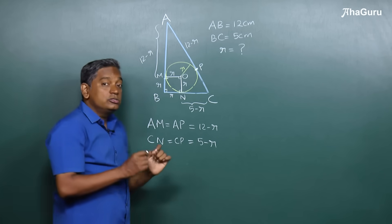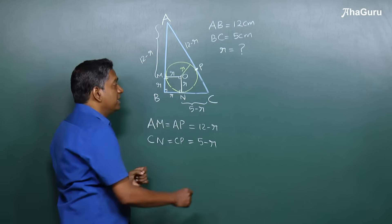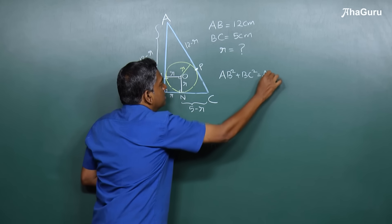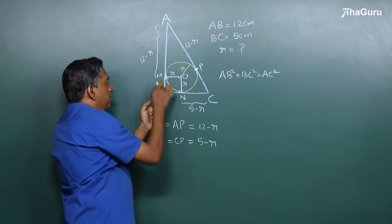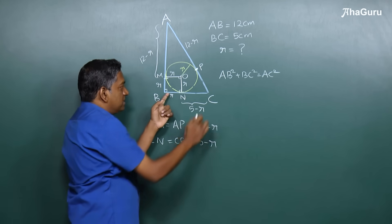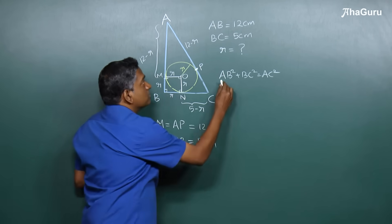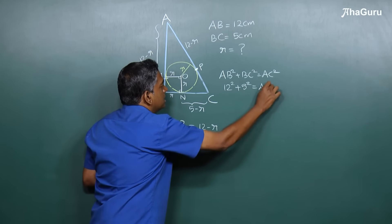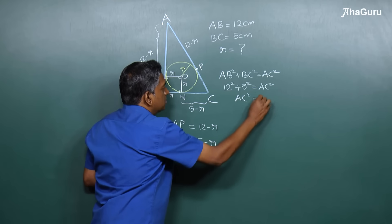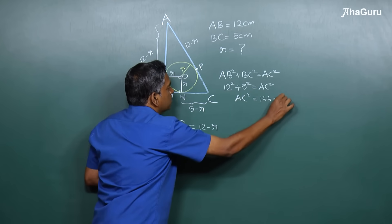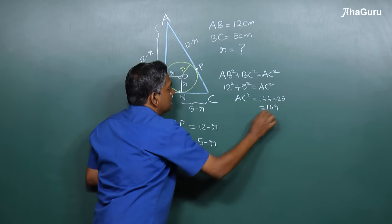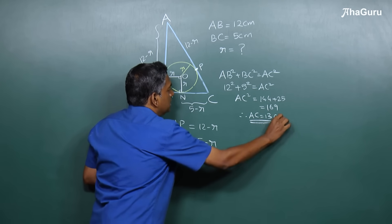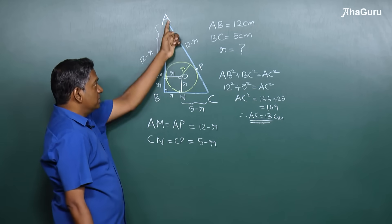We also know from Pythagoras' theorem that AB squared plus BC squared equals AC squared, because angle B is 90 degrees. So 12 squared plus 5 squared equals AC squared. AC squared is 144 plus 25, which is 169. Therefore AC equals 13.